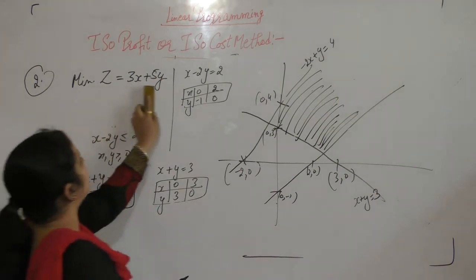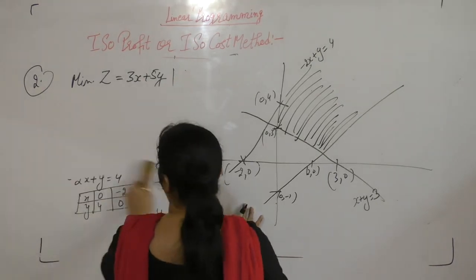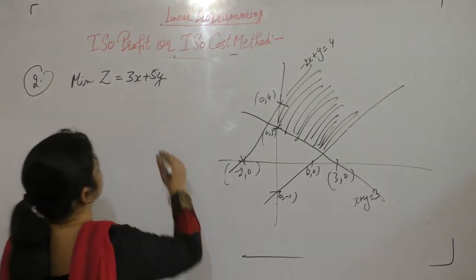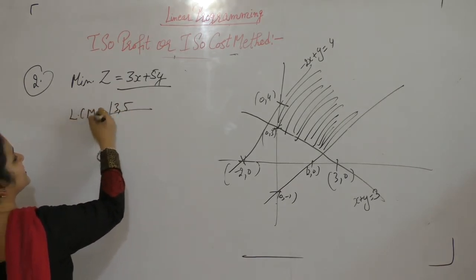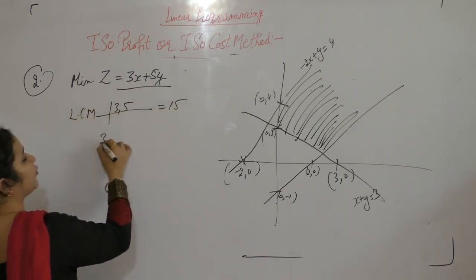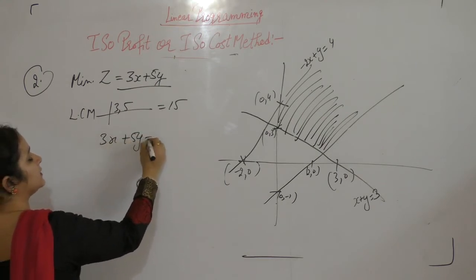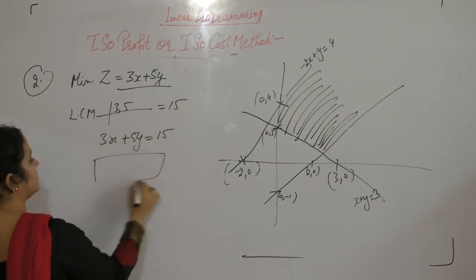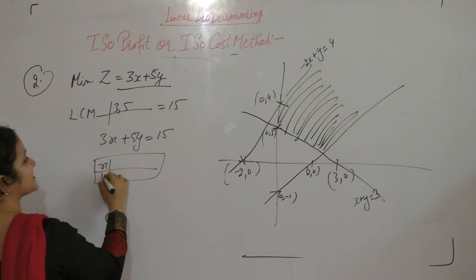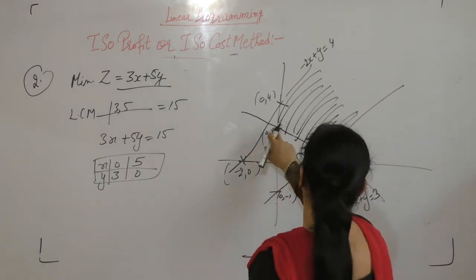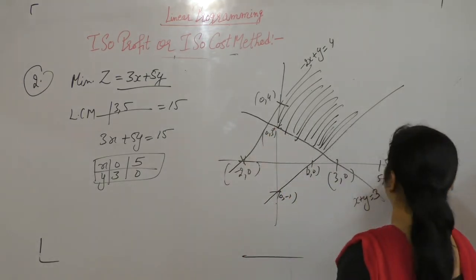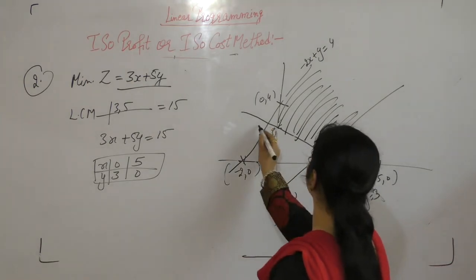Take the objective function 3x plus 5y. Take the LCM of 3 and 5, that is 15. Let Z equal 15. When x is 0, y is 3. When y is 0, x is 5. x is 0, y is 3. x is 5, then y is 0. So this is the line.